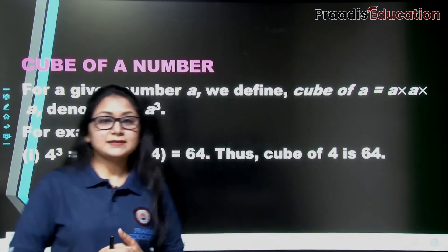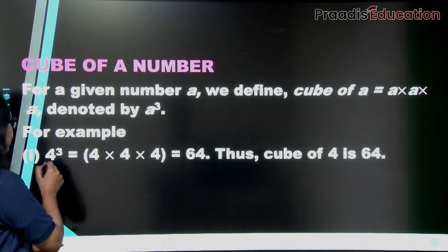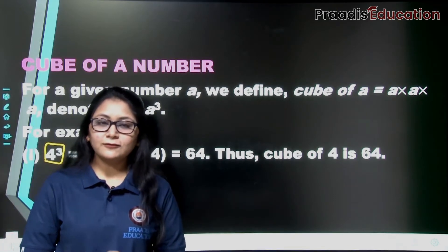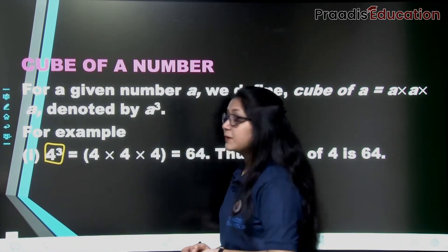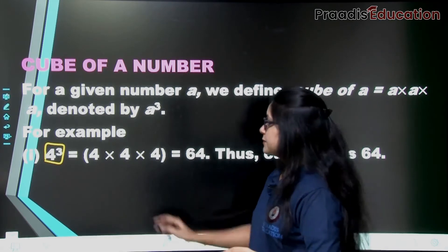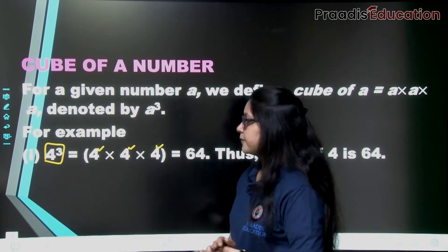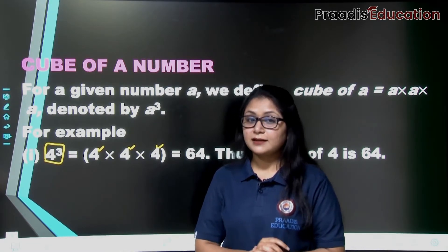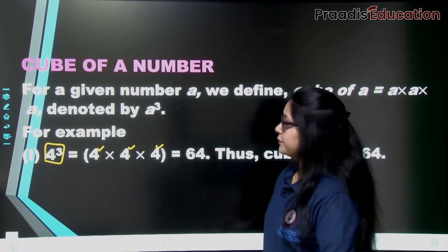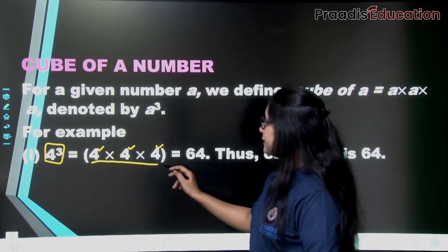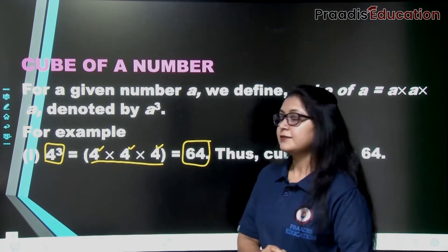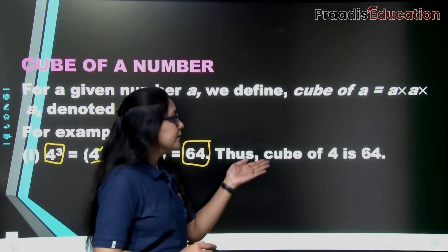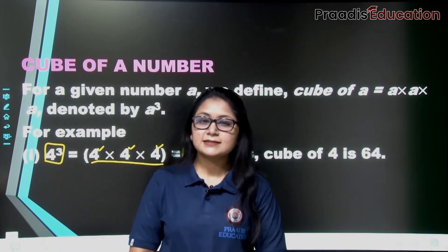Let's look at some examples. Here we have 4 to the power 3 — we are finding the cube of 4. As I told you, we need to multiply 4 three times: 1, 2, 3. If we multiply 4 three times, that means we are finding its cube. When we multiply 4 three times, we get 64. So in short, the cube of 4 is 64.